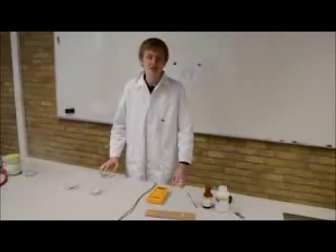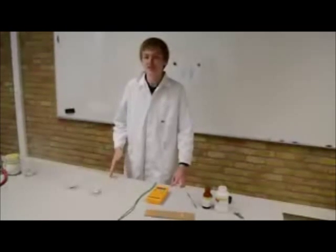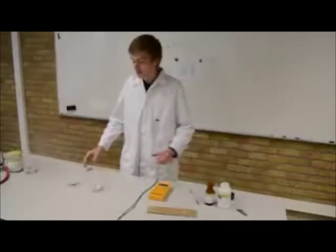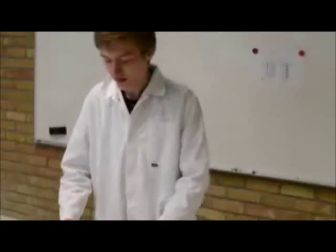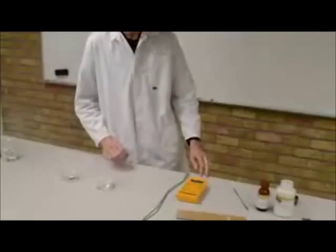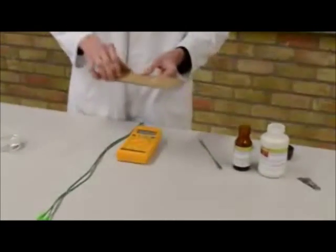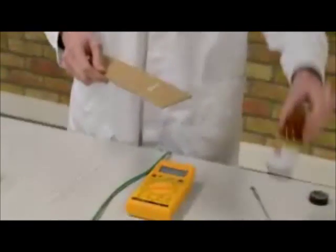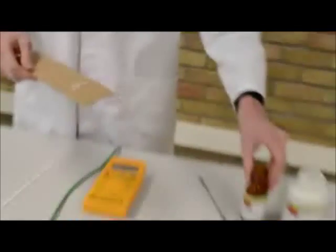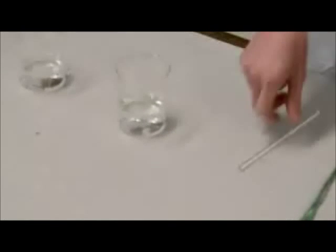I won't explain the chemics behind it but just how to make it because it's really simple. So you start out with two cups with water and the first thing you do is you put a little bit of zinc sulfate as we have here from this jar. We do it in the first jar and you stir it up.